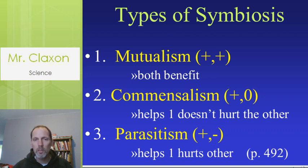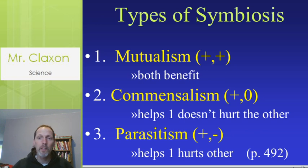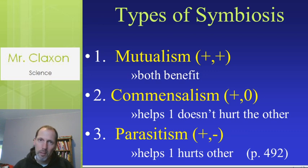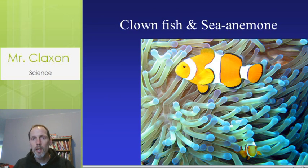Commensalism is when it helps one animal but doesn't really harm the other, so there's no benefit to the second — it's a plus and a zero. And then of course you've probably heard of parasites. For the parasite it helps the parasite obviously, but it harms the other animal. So those are the different types of symbiosis.